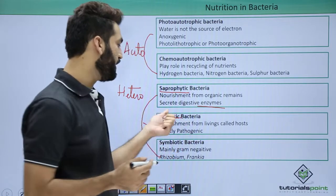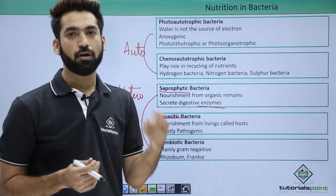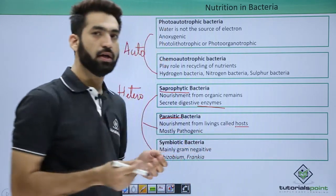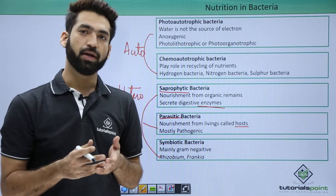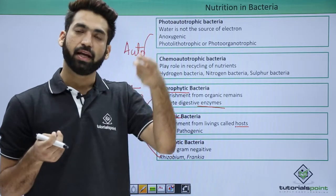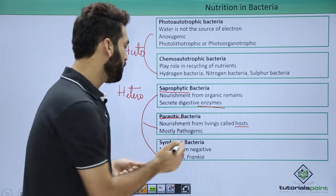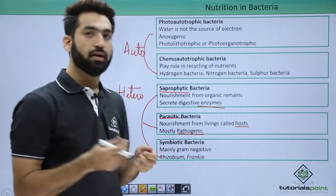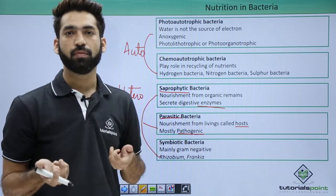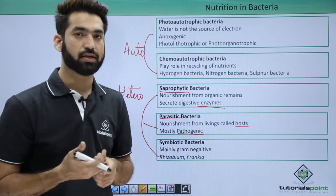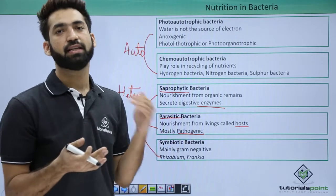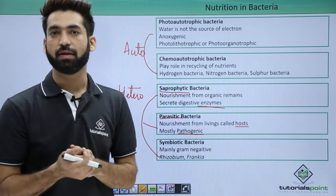Parasitic bacteria always grow on living organisms, which are called the host. They take nourishment from the host and in doing so give disease to that organism — so they are mostly pathogenic. The living host can be animals, plants, humans, or other microorganisms. Once they are taking nourishment from that particular host, they become parasitic and pathogenic.